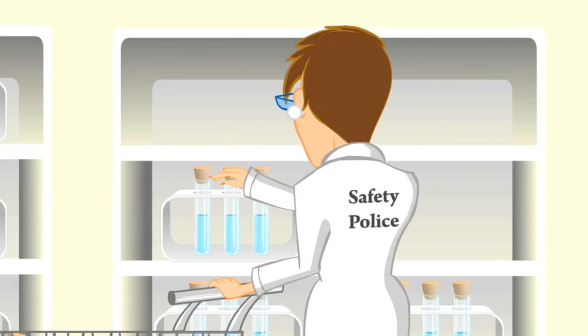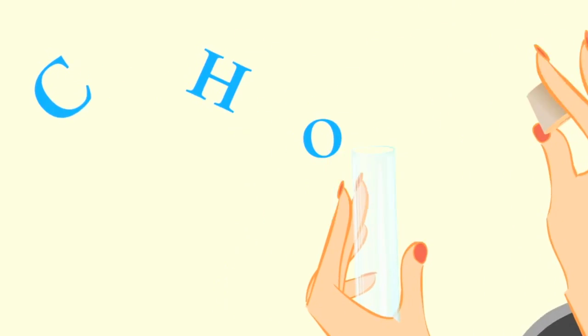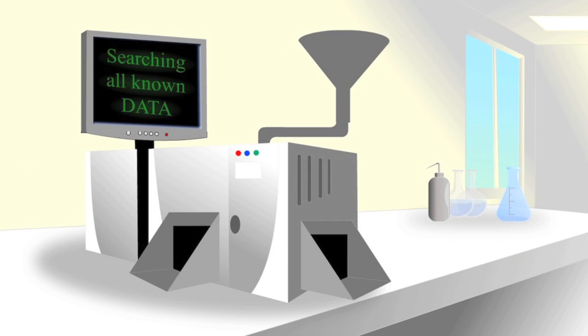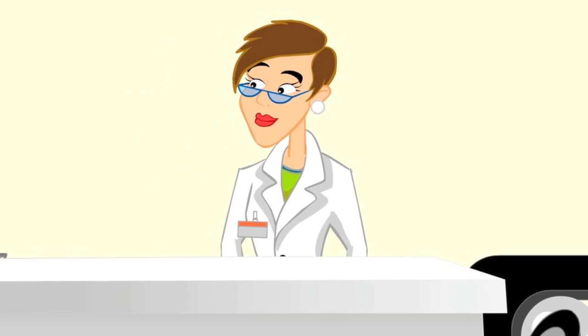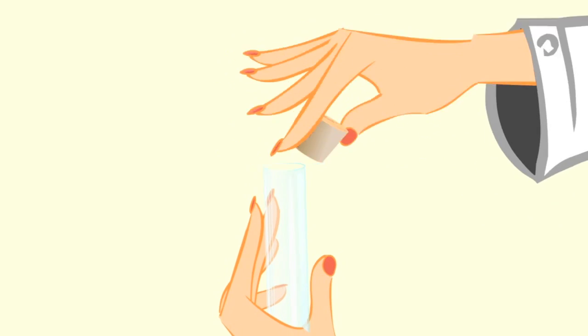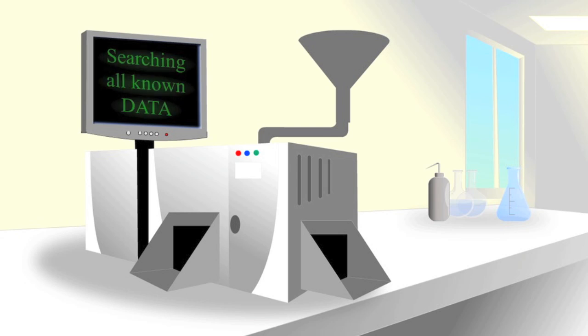Before ingredients are used for a fragrance, they're checked for safety. Every ingredient is broken into parts, and each part checked against existing information on it. If nothing bad turns up, it can be used in a fragrance. Everything else is prohibited or restricted.